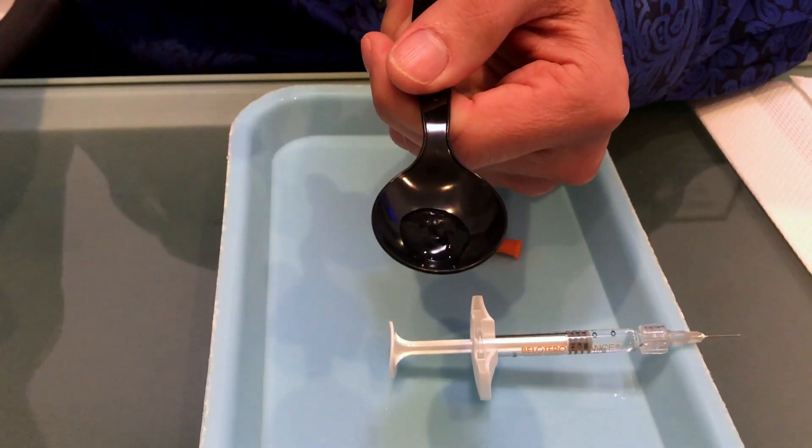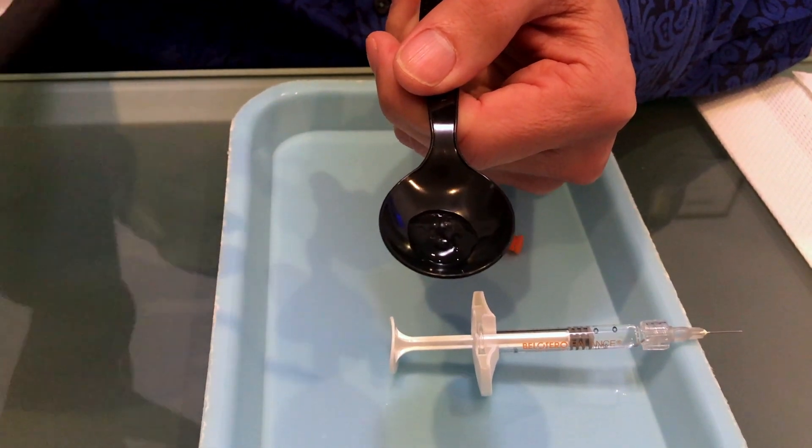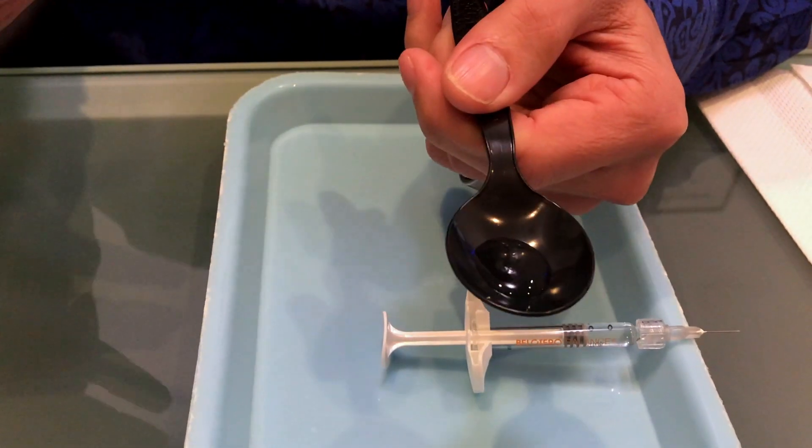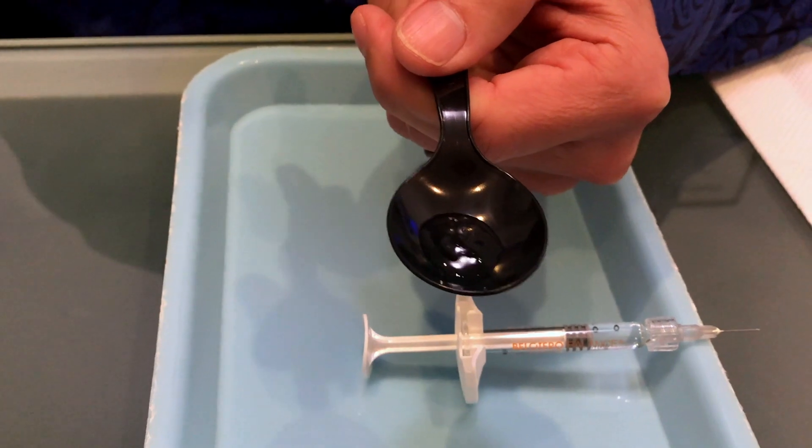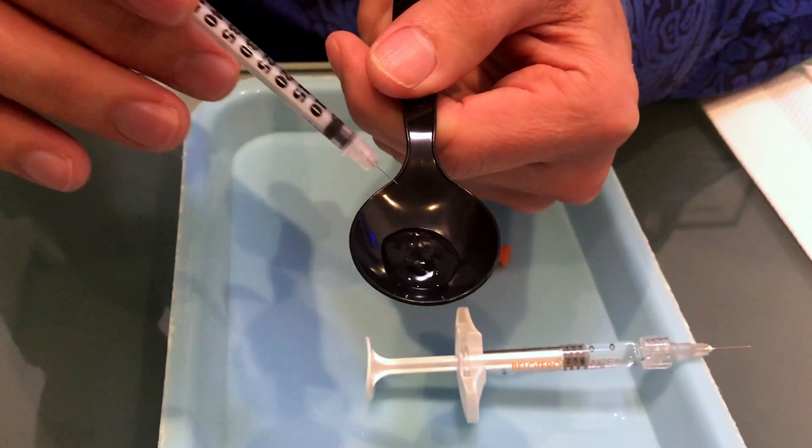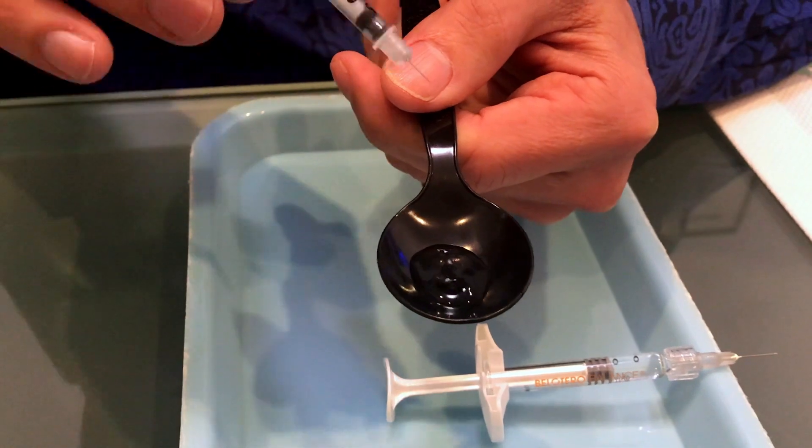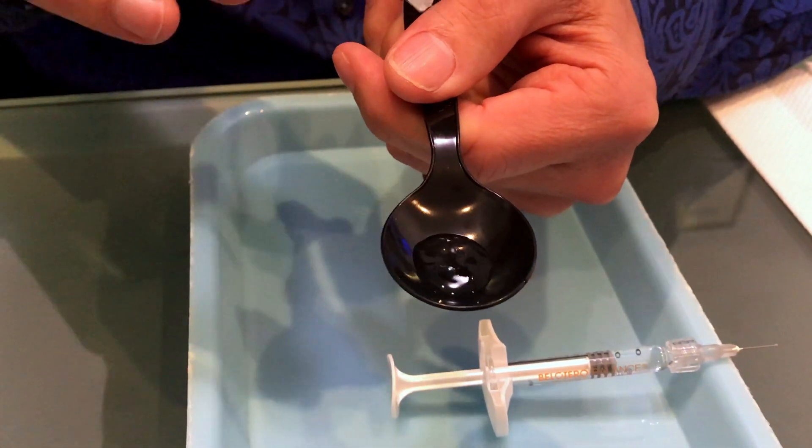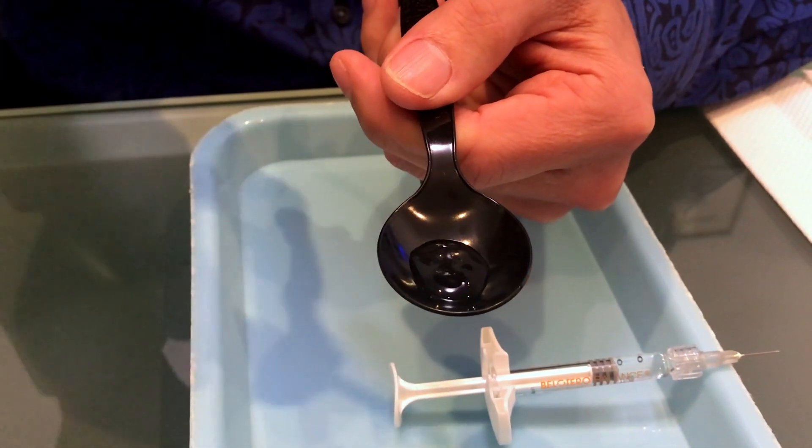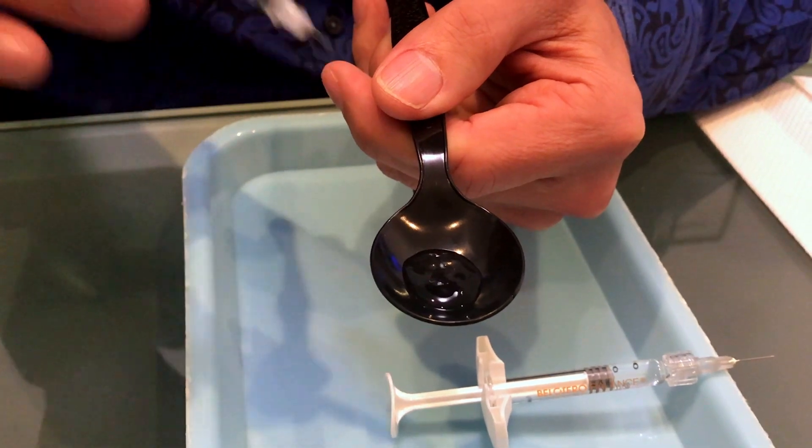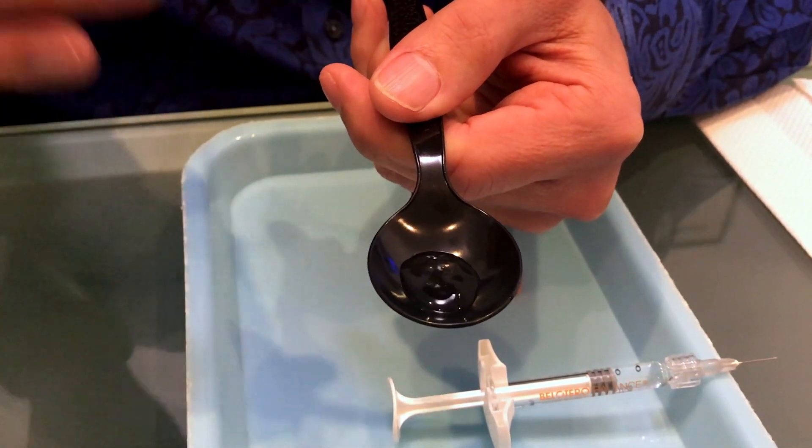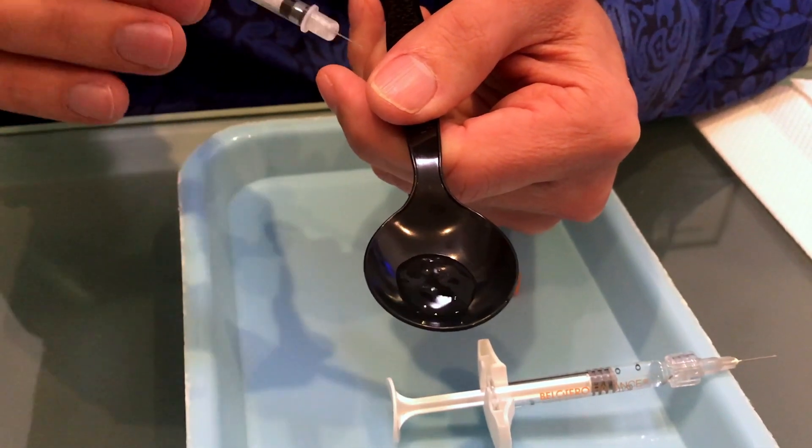So what Hylinex or Hyaluronidase is, it's an enzyme that naturally occurs in the body. Hylinex is a recombinant form of that and what it does is it dissolves Hyaluronic acid fillers like Bellatero, Restylane, Lift, Refine, Voluma, Juvederm, Define, Silk and so forth.